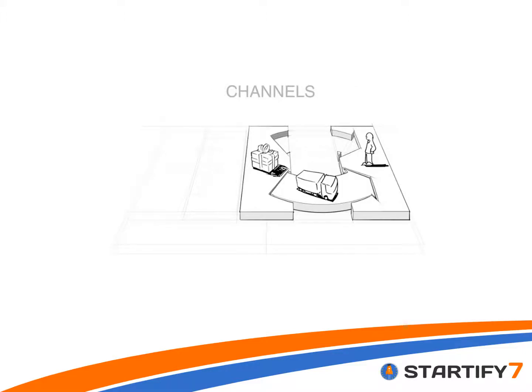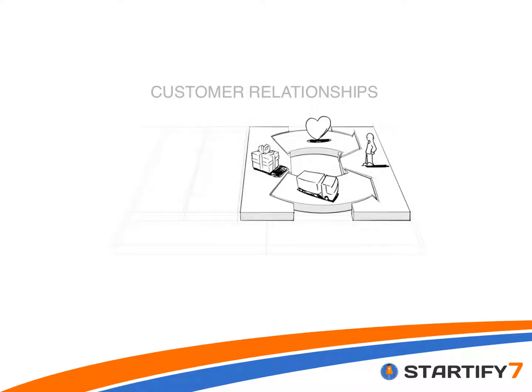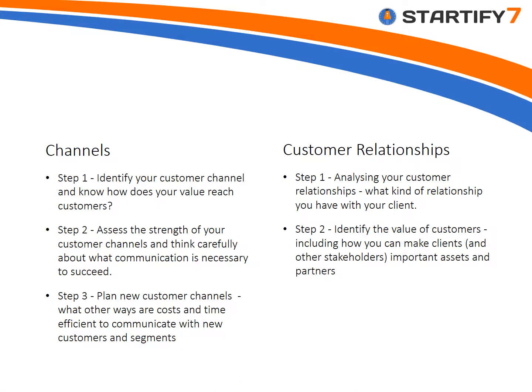Building on this, we can think about the channels by which we get the value proposition to the customer, and also the relationship we have with the customer. In terms of the channel, the first thing to think about is how you're actually going to reach the customer — what the strengths of those channels are and what communication you need to make this work. Within Startify 7, working in the digital sector, we need to think about what channels we'll use to reach customers. It's necessary to consider how you plan to reach them, what the channels are, how they'll be developed, how much they'll cost, and what the most time-efficient way to communicate is.